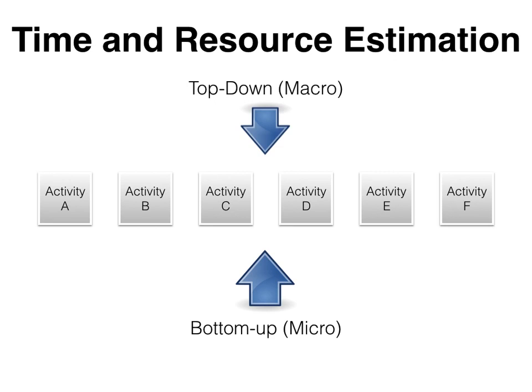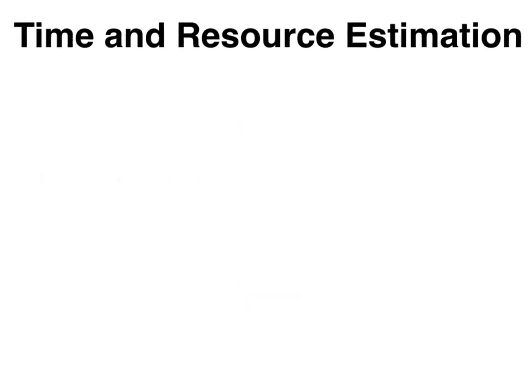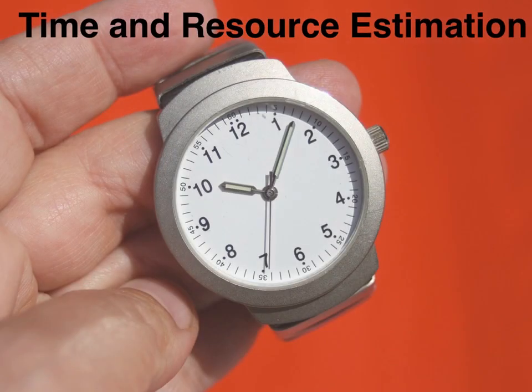There are two basic categories of estimation techniques. Top-down or macro estimates use some sort of analogy, group consensus, or mathematical relationship in order to make a relatively quick, but not as accurate, prediction of our costs and time requirements. Bottom-up or micro estimates are made using the elements from our work breakdown structure, take a little more time to produce, but are much more accurate. So hopefully you understand a little bit about the importance of time and resource estimation for any project.